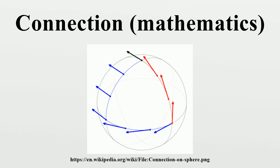A Koszul connection is a connection generalizing the derivative in a vector bundle. Connections also led to convenient formulations of geometric invariants, such as the curvature and torsion tensor.